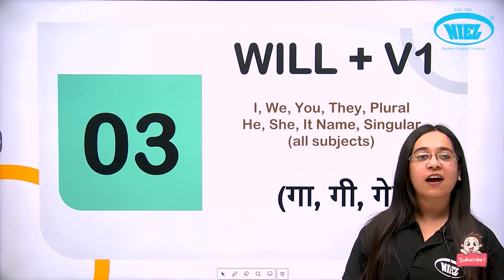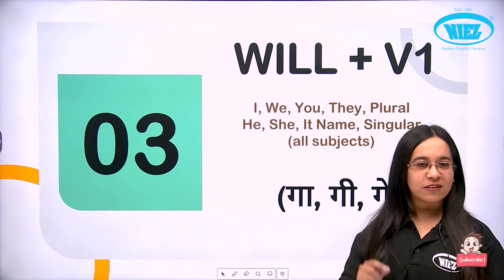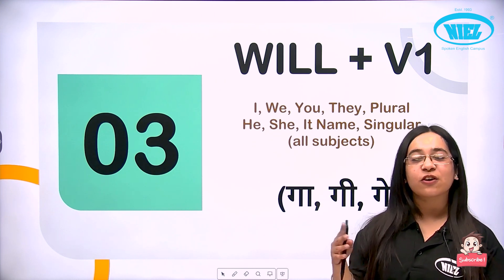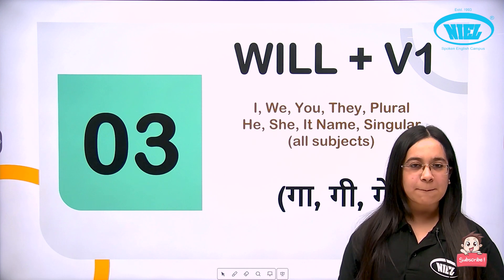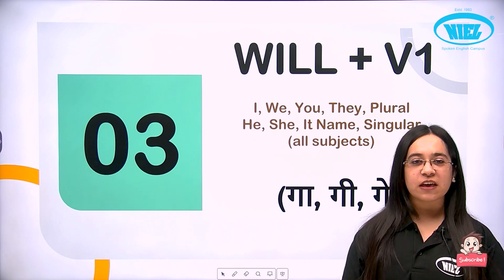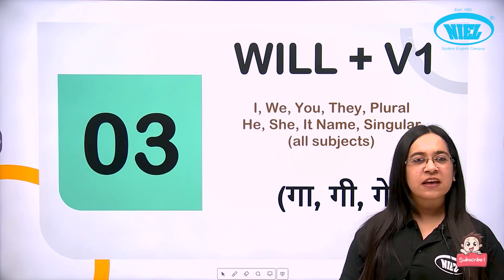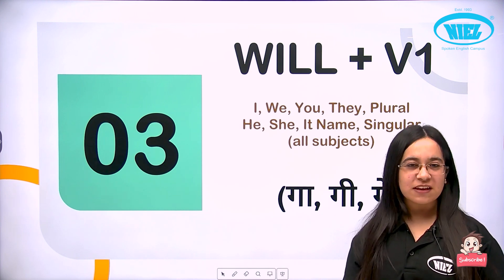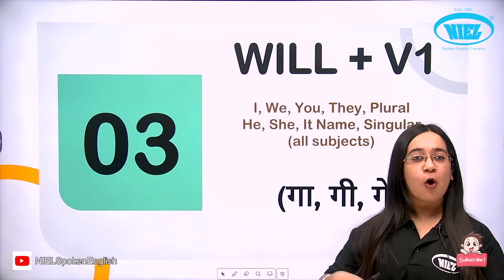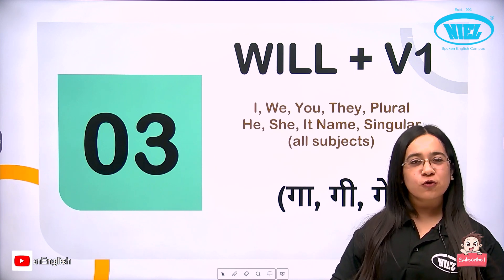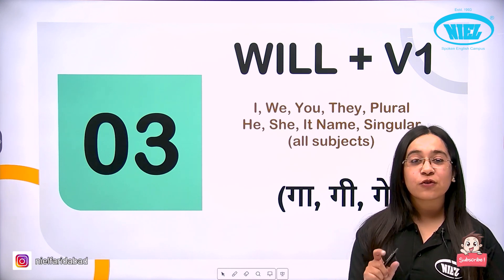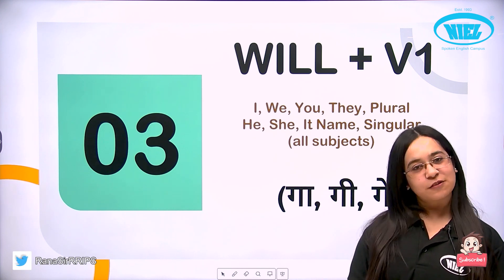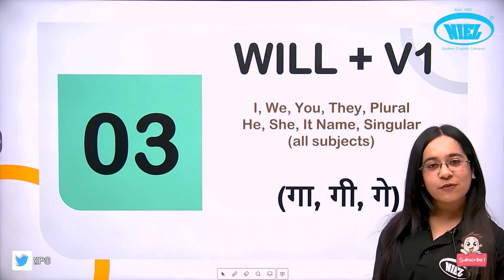We will use this rule when talking about the future. A common sense clue: the Hindi ending will always be -ga, -gi, or -ge. For example: kya aap kal office jaoge, kya tum English sikhoge, kya tum ko hi academy join karoge, kya aap kuch exercise karoge — whenever there is a future conversation, we use will with first form.